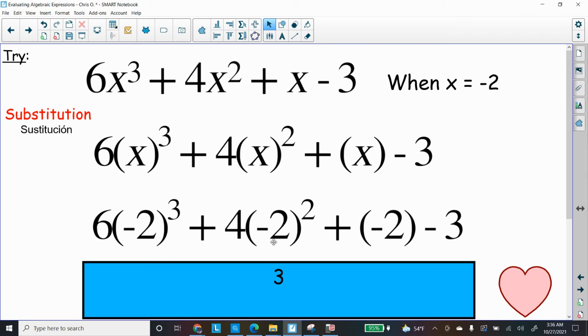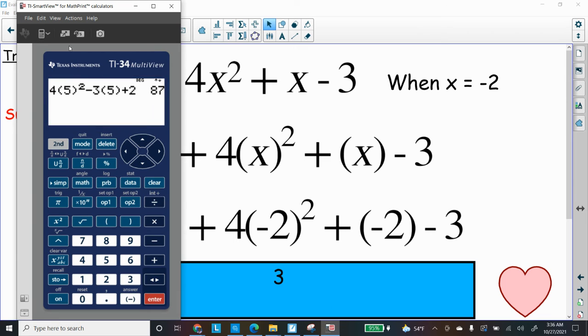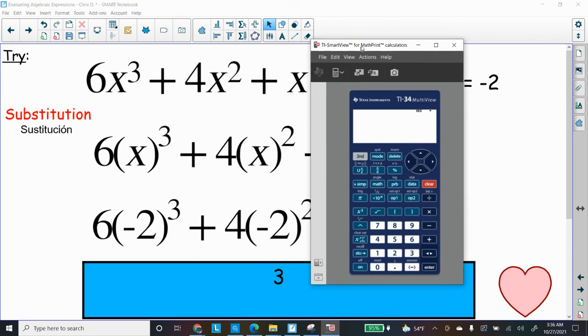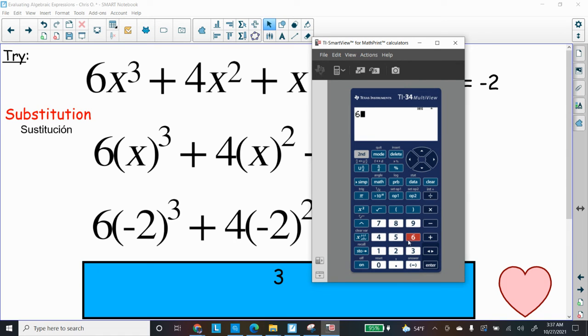Now all I got to do is get my calculator out. Let's clear that and type all that stuff in there. So let's type 6(-2)—remember to use the negative button underneath the 3.